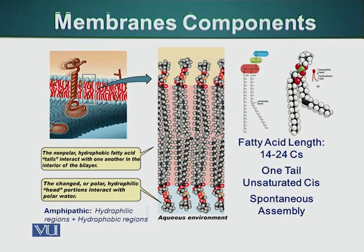Membranes are basically composed of phospholipids. These phospholipids can be saturated or unsaturated, meaning that the fatty acids present in the lipid molecules may or may not have double bonds. Fatty acids without double bonds are called saturated fatty acids; those with double bonds are called unsaturated fatty acids. The length of fatty acids is about 14 to 24 carbon atoms long.